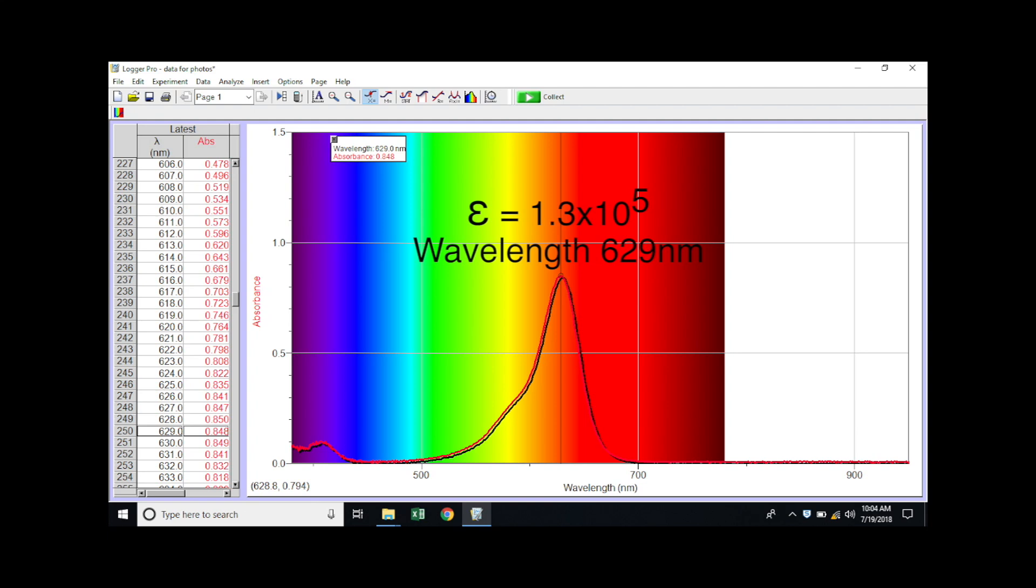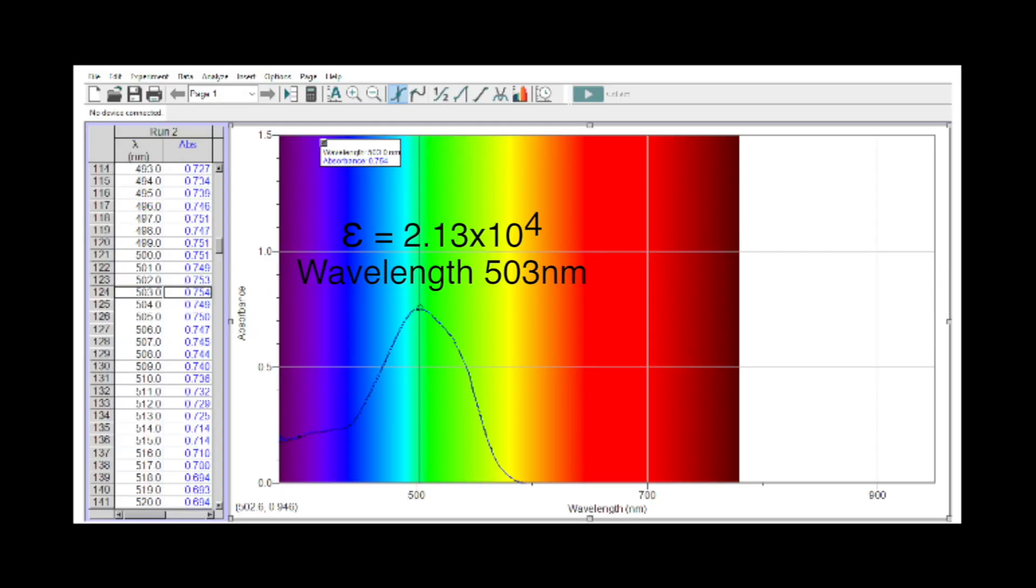It should be noted that the absorbance and molar absorptivity of a chemical species are wavelength dependent, meaning they vary depending on which wavelength they are measured at.